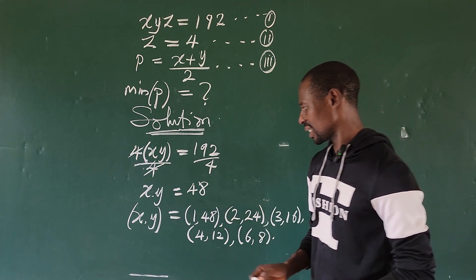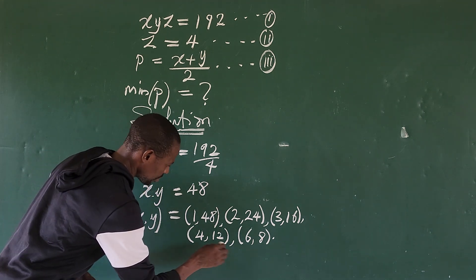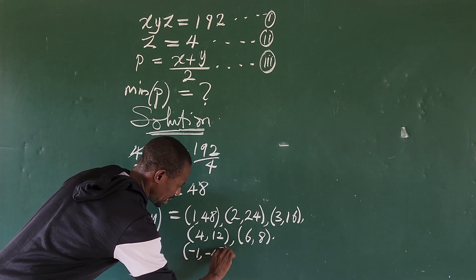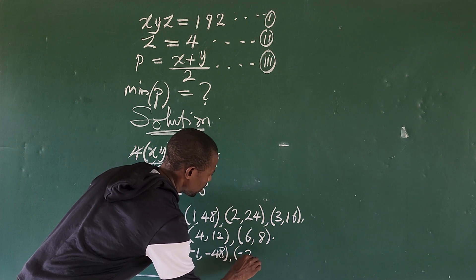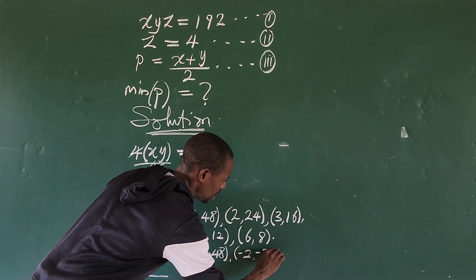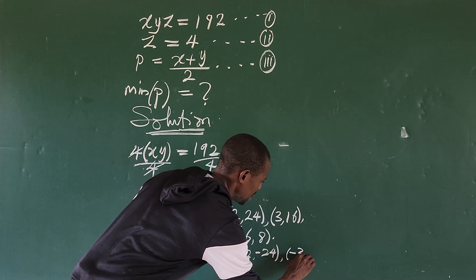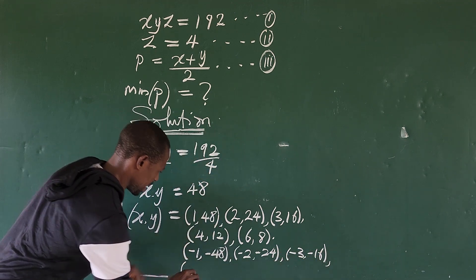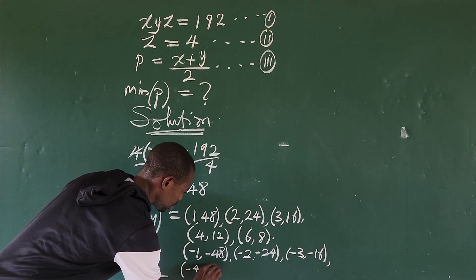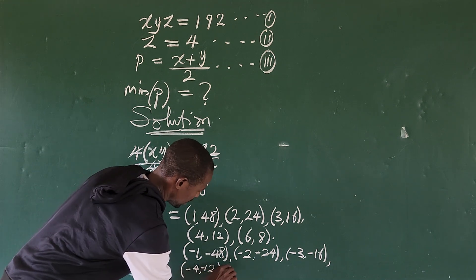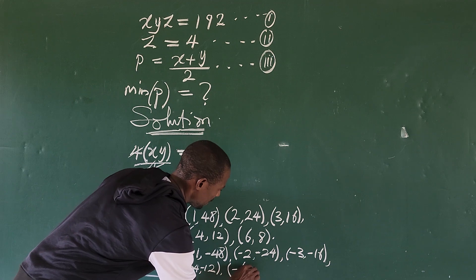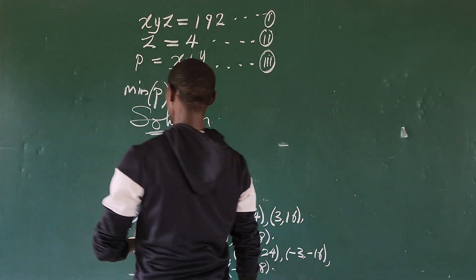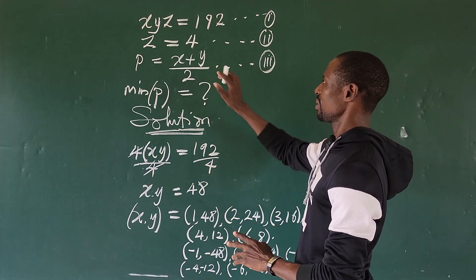Now let's look at the negative side. For the negative factor pairs we have: (−1, −48), (−2, −24), (−3, −16), (−4, −12), and (−6, −8).